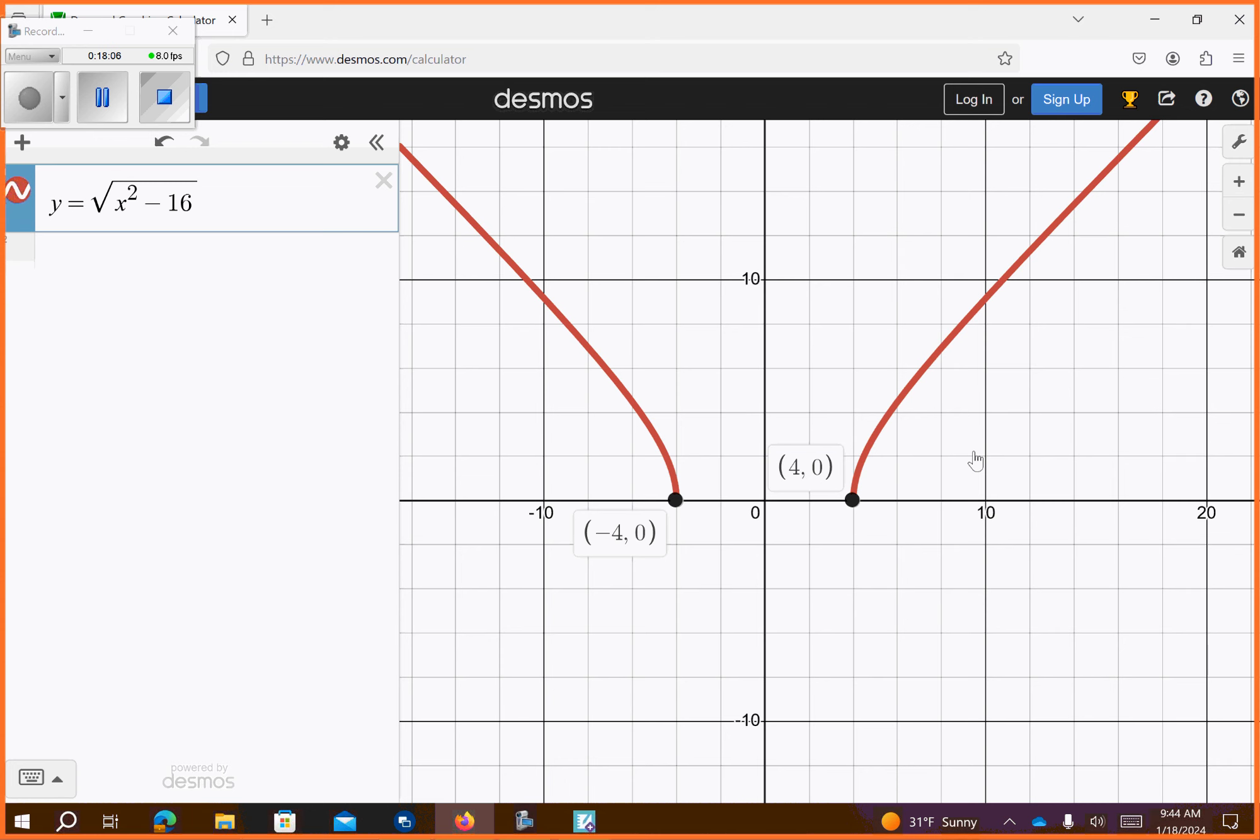Can I plug negative 4 into my original and get an answer that is 0? If I go negative 4, plug it in for x squared, what's negative 4 quantity squared? 16. What's 16 minus 16? 16, 0. What's the square root of 0? 0. Cool. That works. And then, can I plug 4 in as well? 4 squared is? 16. 16 minus 16, 0. Square root of 0 is 0.